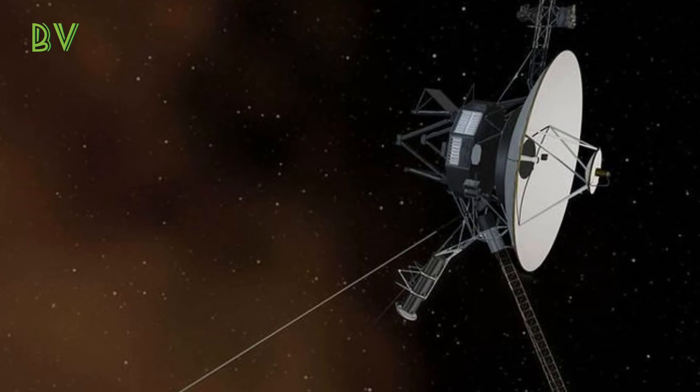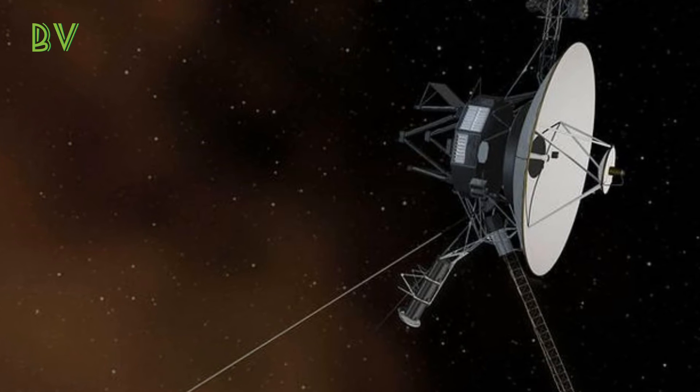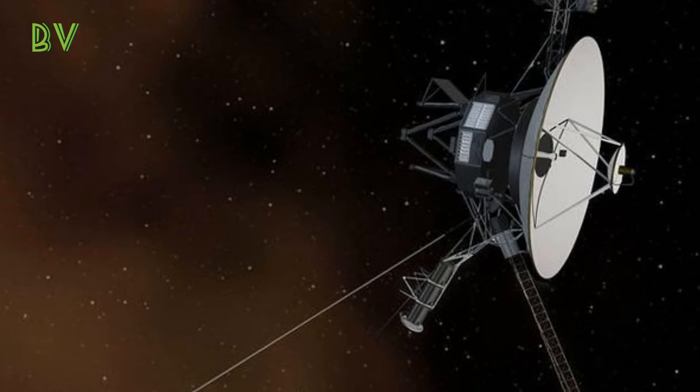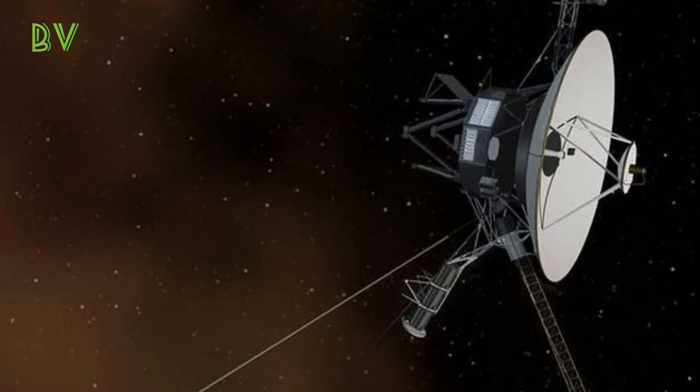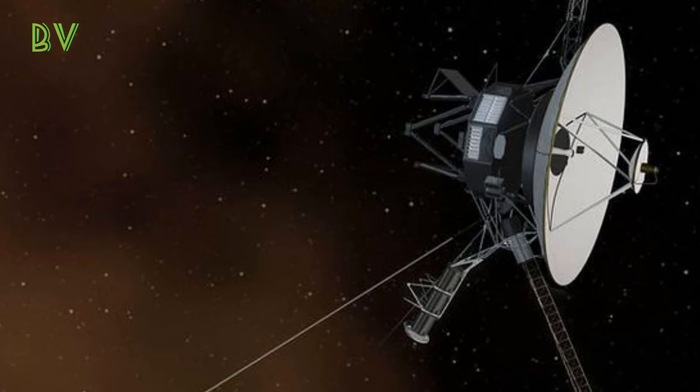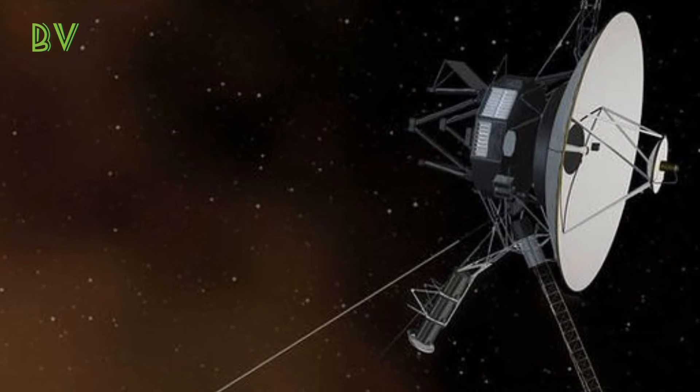It took 19 hours and 35 minutes for the commands to reach Voyager 1, and just as much time for Voyager to beam the results of the test back to NASA's Deep Space Network antenna in Goldstone, California.